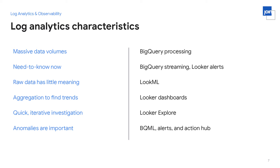Coming back to those characteristics of log analytics, each one lines up nicely with BigQuery and Looker features. That massive data volume is met by BigQuery's processing power. The need to know now is met by BigQuery streaming for near real-time ingestion, as well as Looker alerts. LookML is a great way to give meaning to raw data. Looker dashboards can aggregate and find trends, and Looker's Explorer can be used to quickly investigate and iterate on data. Anomalous activity can be handled by BigQuery Machine Learning (BQML), which can run models like a K-means cluster model to identify what's normal and what's abnormal, and then use Looker's alerting and Action Hub to trigger notifications and actions.